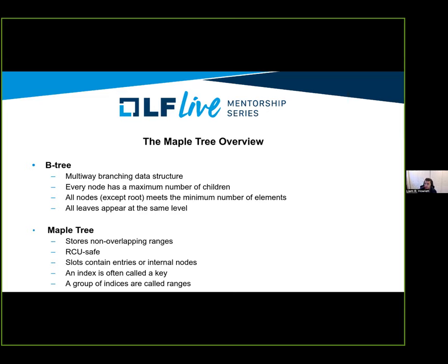The maple tree meets most B-tree requirements. What makes it special is the ability to store ranges — one entry can be found by multiple indices. One index can still reference one entry, but it's less efficient with today's implementation, and we'll be looking at fixing that in the near future. Another benefit is RCU protection on readers, meaning writers don't have to hold up readers. There are also terminology differences: we call storage locations slots, and pivots are usually referred to as keys. We use pivots with index and last as the range for a particular entry — we call them pivots because each can represent many keys.